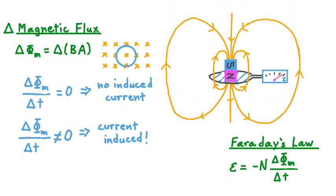For example, say that we had a uniform magnetic field directed into the screen, and in a plane perpendicular to that field direction, we had a circular conducting loop. If our field was constant in time — it didn't get stronger or weaker or change direction — and if the area of our conducting loop exposed to the field also didn't change in time — the ring didn't grow or shrink or rotate — then we would have both a constant magnetic field and a constant area. In this case, the change in magnetic flux would be zero, and therefore no EMF would be induced in our loop, and so no current would travel through it.